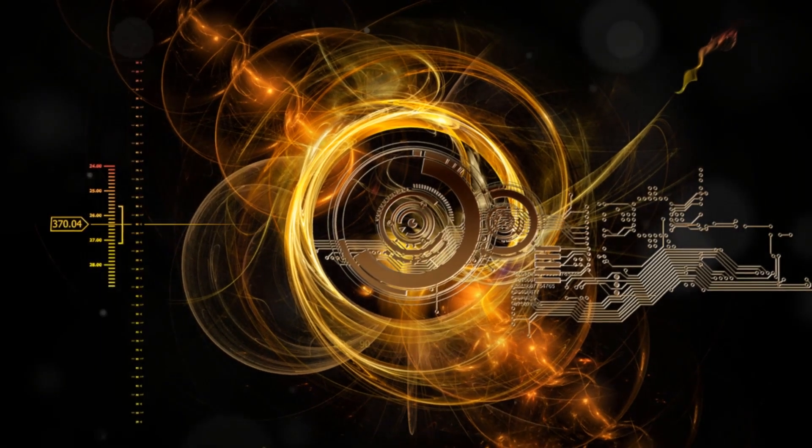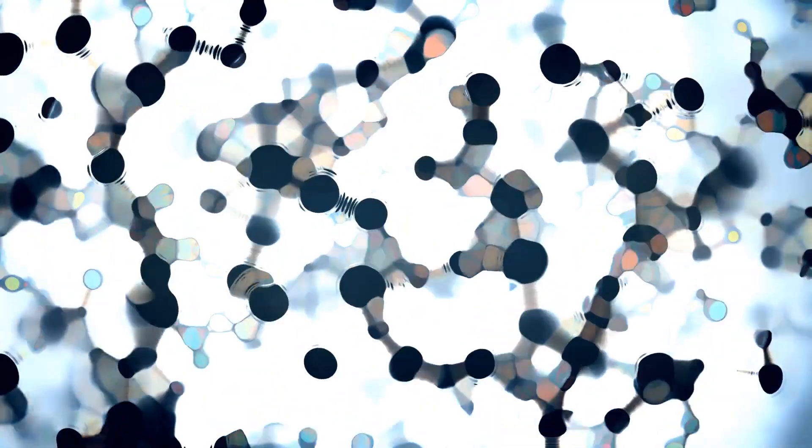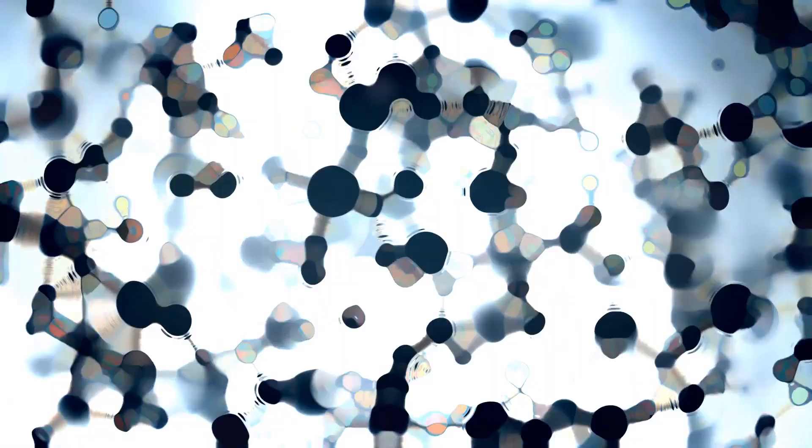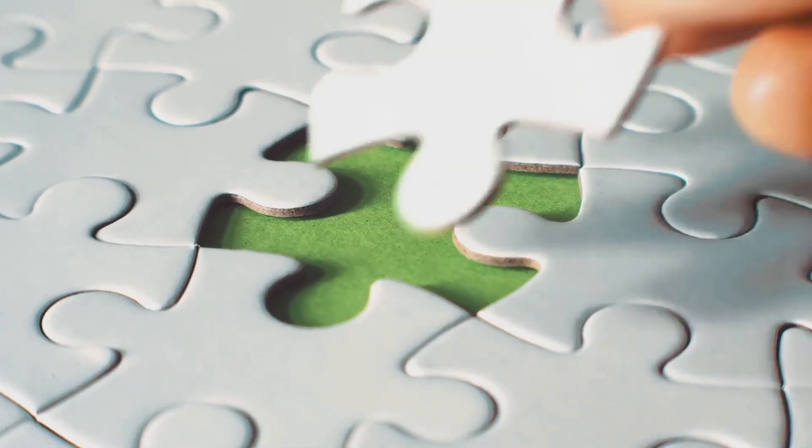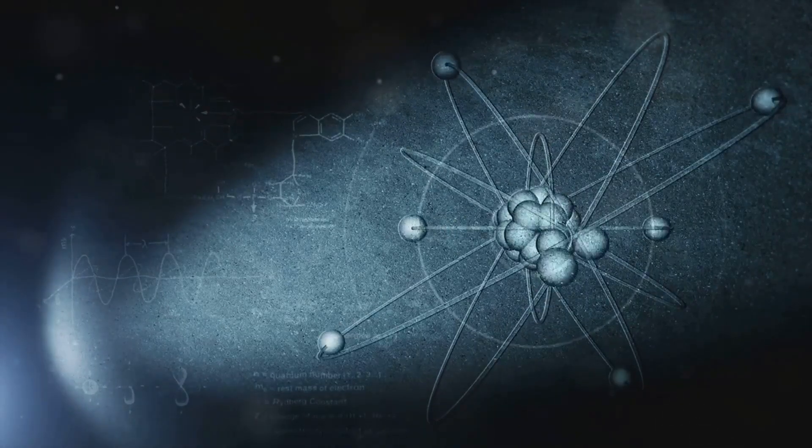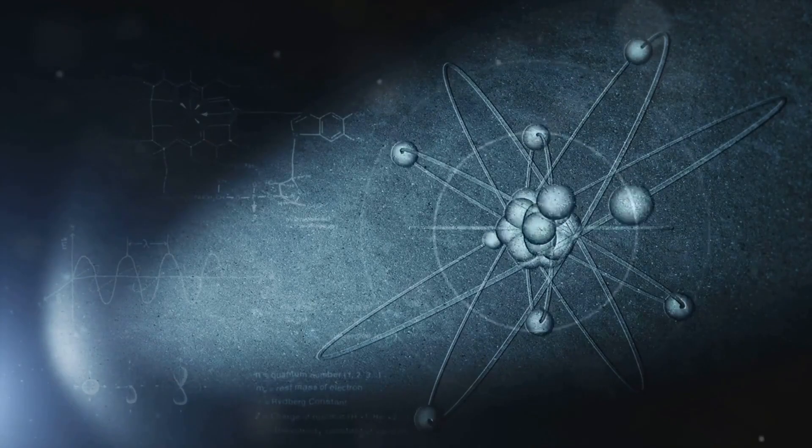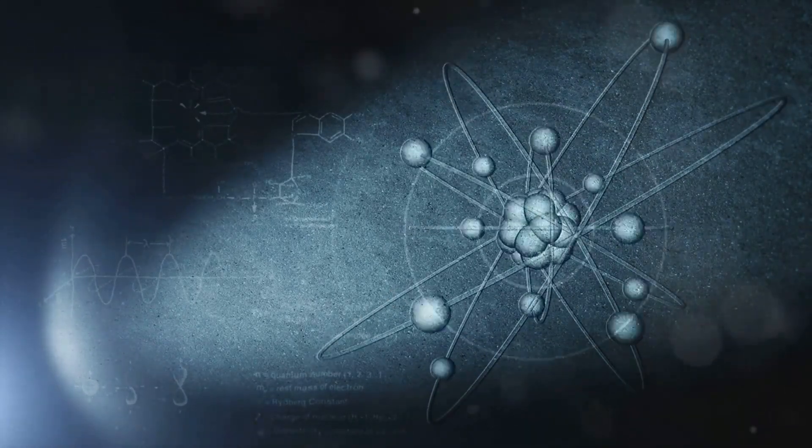The Higgs boson was a missing piece in the standard model of particle physics. This model describes the fundamental forces and particles that make up our universe. Finding the Higgs boson was like finding the final piece of a cosmic jigsaw puzzle. But the discovery also raised new questions. What is the nature of the Higgs field? Why do particles have different masses? The hunt for the God particle may be over, but the quest to understand its implications has just begun.